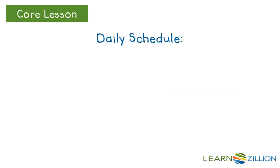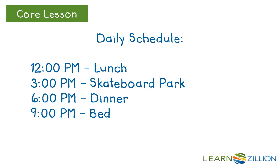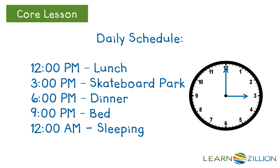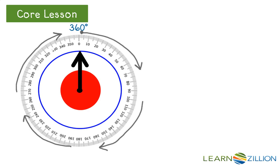I had to keep track of my schedule and I noticed that each time I looked at the clock, the minute and hour hands formed angles. Let's take a look at each time to see how to identify each of the angles formed. We know that as one ray rotates completely around a circle, it makes an angle that measures 360 degrees.